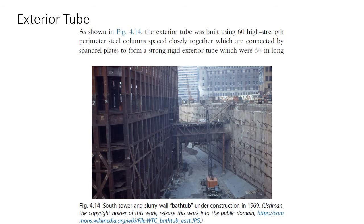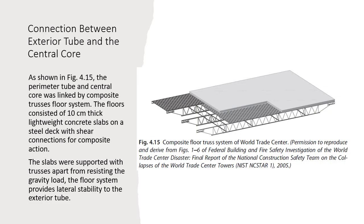As shown in Figure 4.14, the exterior tube was built using 60 high-strength perimeter steel columns spaced closely together, connected by spandrel plates to form a strong rigid exterior tube 64 meters long. As shown in Figure 4.15, the perimeter tube and central core were linked by a composite truss floor system. The floors consisted of 10 cm thick lightweight concrete slabs on a steel deck with shear connections for composite action, supported by trusses, providing lateral stability to the exterior tube.